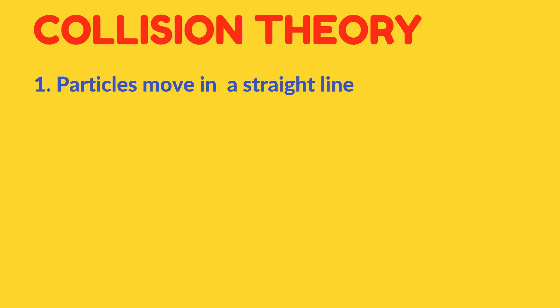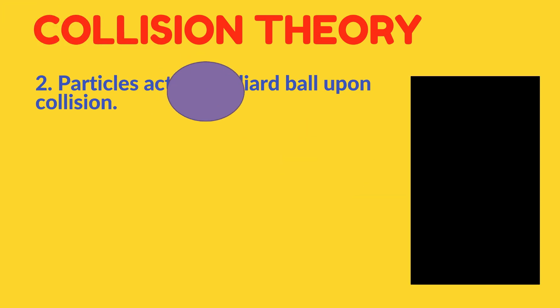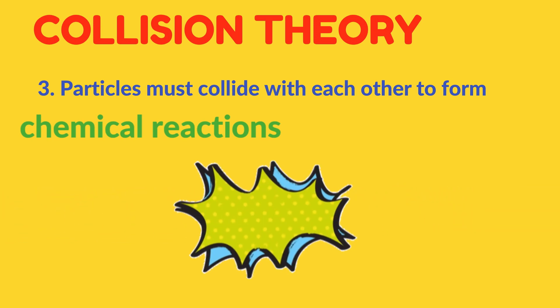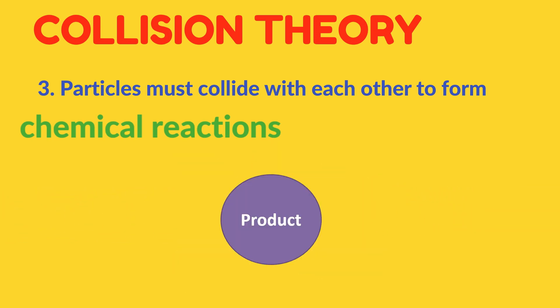The next concept is Collision Theory or the Kinetic Molecular Theory, which we can break into three parts. First, particles always move in a straight line. Second, particles act like billiard balls upon collision. Third, the particles must collide with each other to form chemical reactions or forming the products through collision.